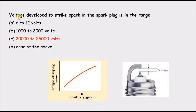The next question is: voltage developed to strike a spark in a spark plug is in the range of — options are 6,000 to 12,000; 2,000 to 20,000; 20,000 to 25,000; or none of the above. We know that the battery supplies the energy required for the ignition system, supplying around 12 volts as input.